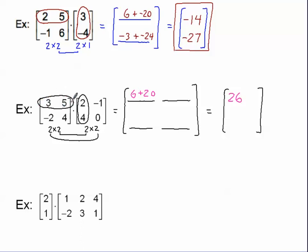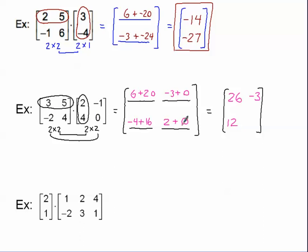Moving to the bottom row: the second row times the first column gives the entry in the second row, first column. Negative 2 times 2 gives negative 4, and 4 times 4 gives 16 — add those to get 12. Finally, the second row times the second column: negative 2 times negative 1 gives positive 2, and 4 times 0 gives 0 — add those to get 2. So the final 2 by 2 answer is complete.